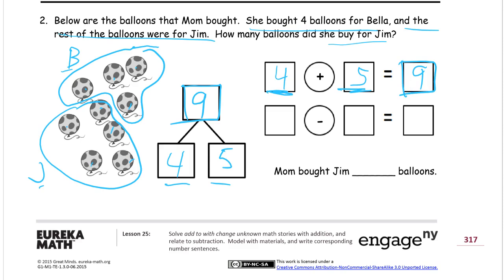The same thing works backwards. The first thing we did was count how many there were, so we started with nine. Then we circled the four for Bella — those are the ones we subtracted. Four is our subtrahend, that's how many we took away. And then how many were left? That's the difference — five, the five that Jim had. That's what was left. Mom bought Jim five balloons.